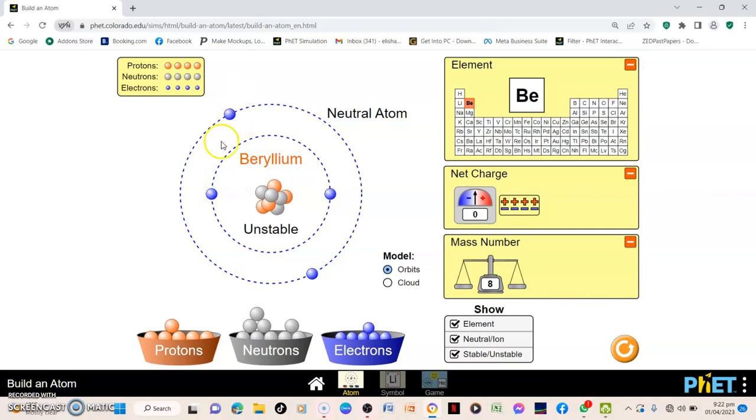An atom is neutral in terms of charge because the negative charges cancel out with the positive charges. There is a balance in charge. There is no charge which is greater than the other. Hence, an atom is neutral in nature.